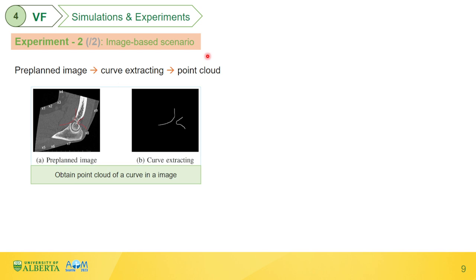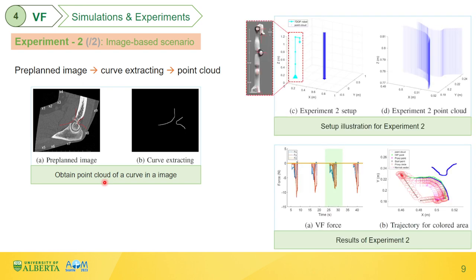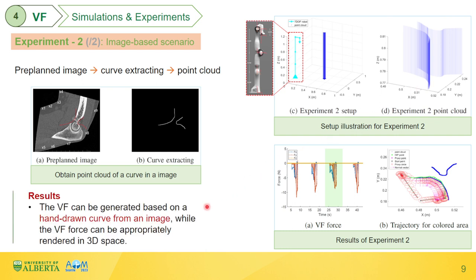In experiment 2, the VF is evaluated in an image-based scenario. First, a preplanned image is obtained. Next, hand-drawn curves are extracted using image processing techniques. Based on the extracted curves, a set of point cloud is obtained and registered into the robot base frame. The results demonstrate that the VF can be generated based on a hand-drawn curve from an image, and the VF force can be appropriately rendered in 3D space.